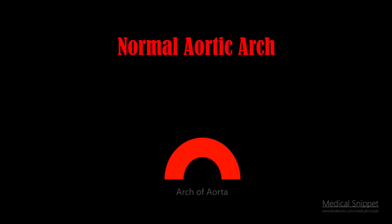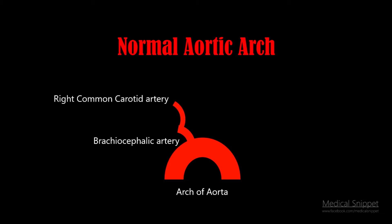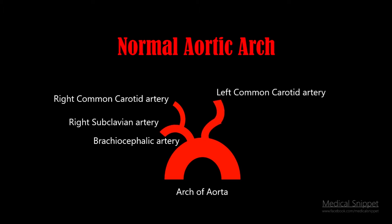Normal aortic arch has three branches. The first is the brachiocephalic artery, which divides into the right common carotid artery and right subclavian artery. The second branch is the left common carotid artery, and the third branch is the left subclavian artery.